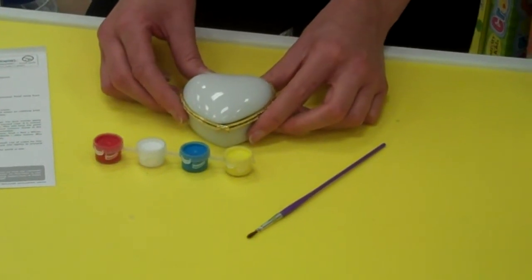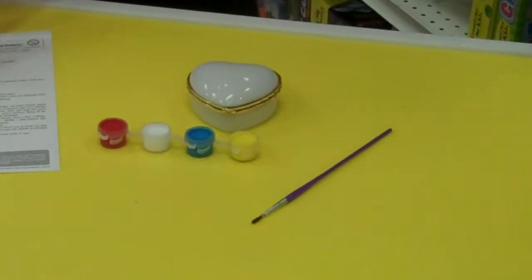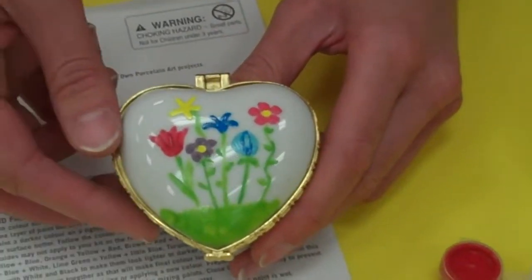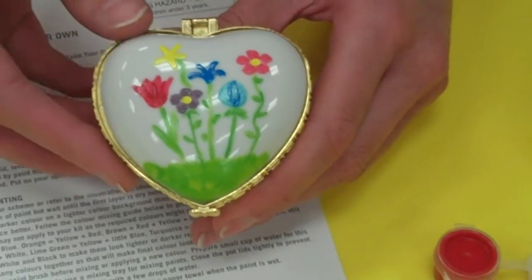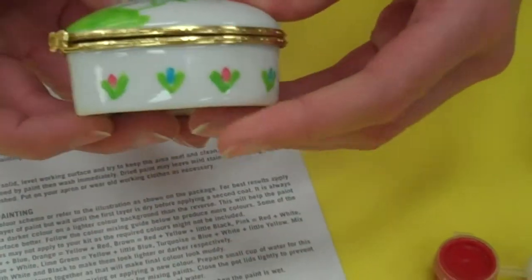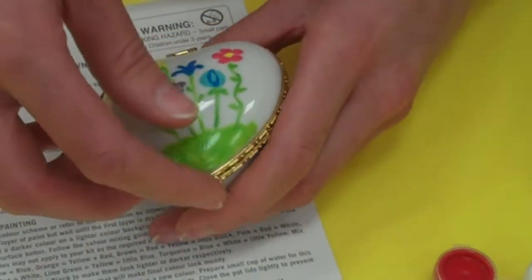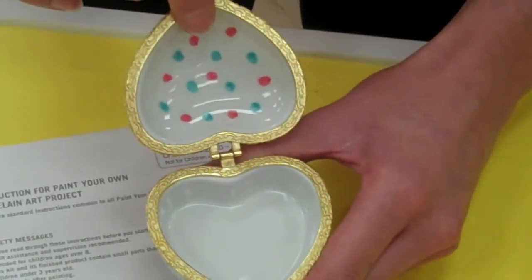So let me show you what this piece looks like when it's all complete. We've actually done one here and we've put a bunch of flowers on the top. You can see the colors are very vibrant. We've put a few flowers around the side here and we've even decorated the inside with some polka dots.